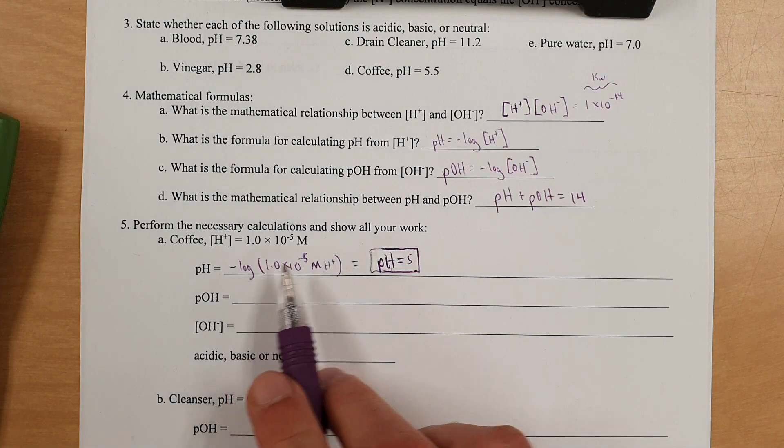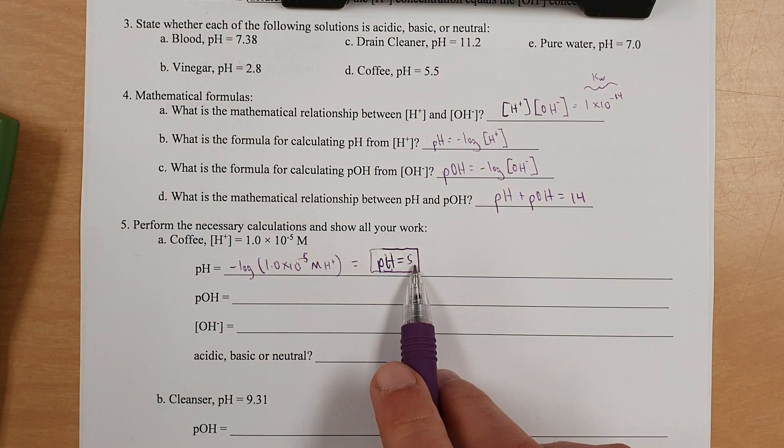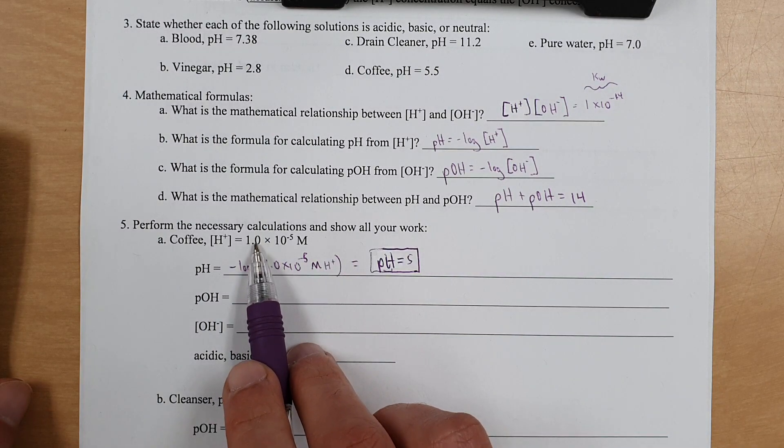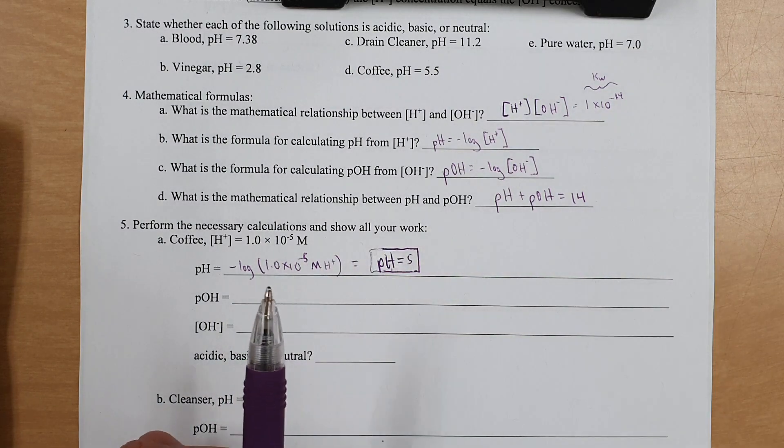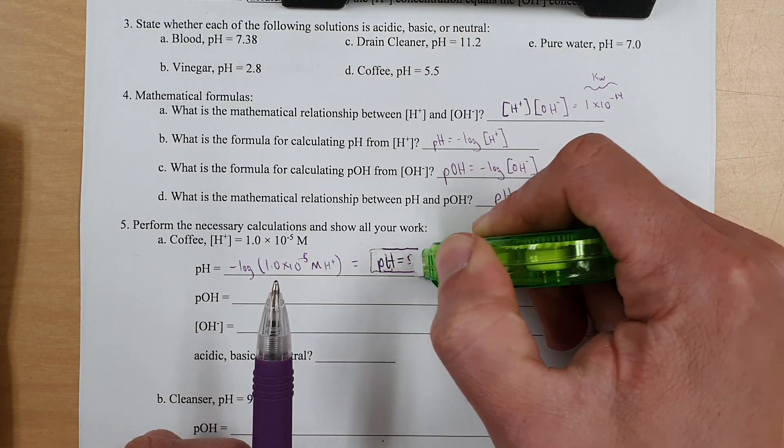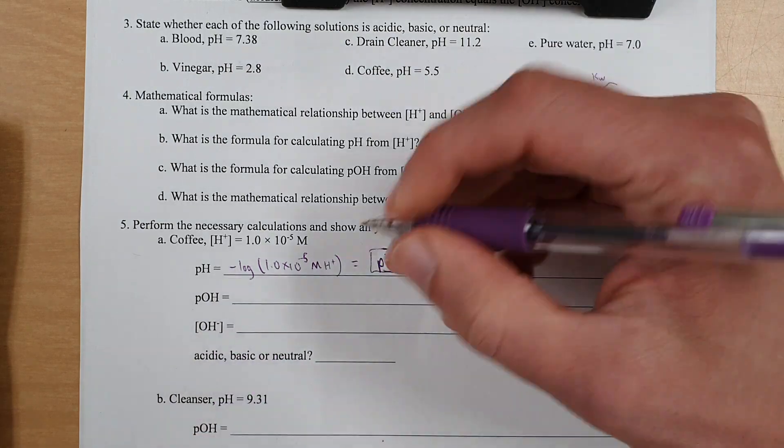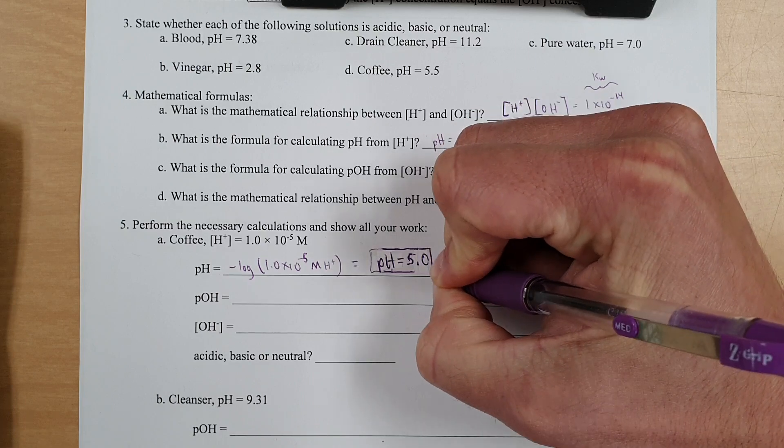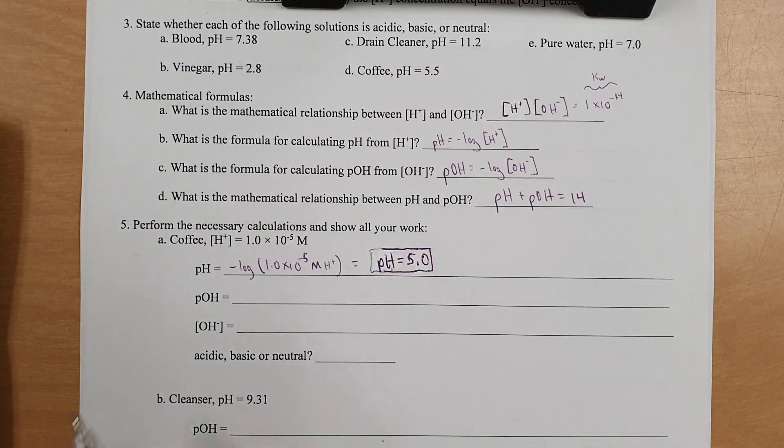Now, I will add one thing beyond that. It said 5, but sig fig rules apply. Two sig figs, two sig figs. So we're going to actually expand that to 5.0 to reflect two significant figures.